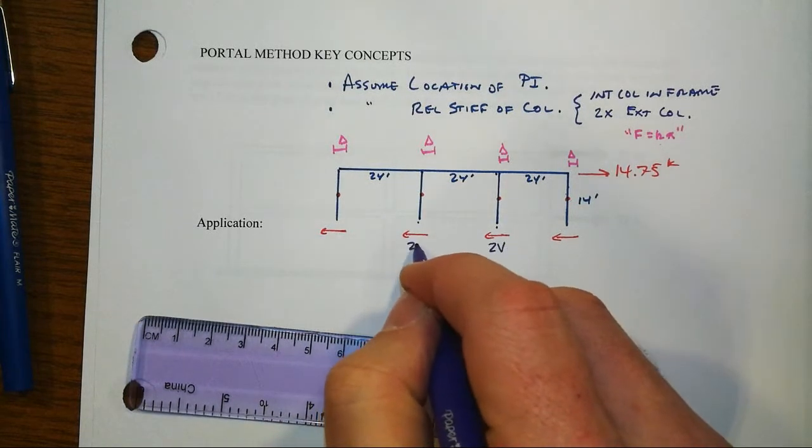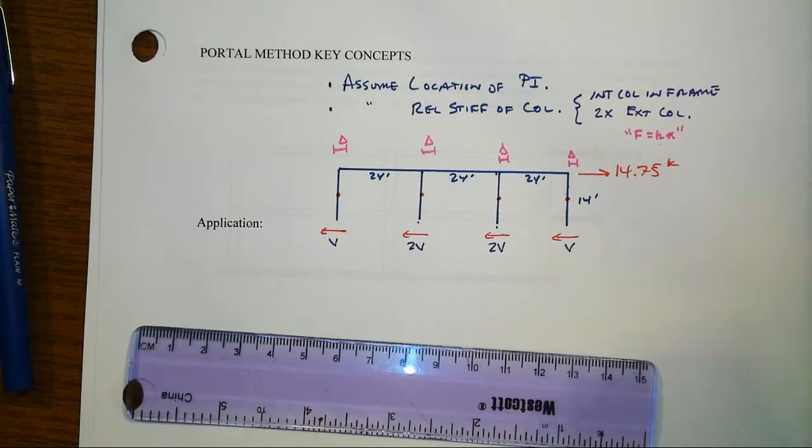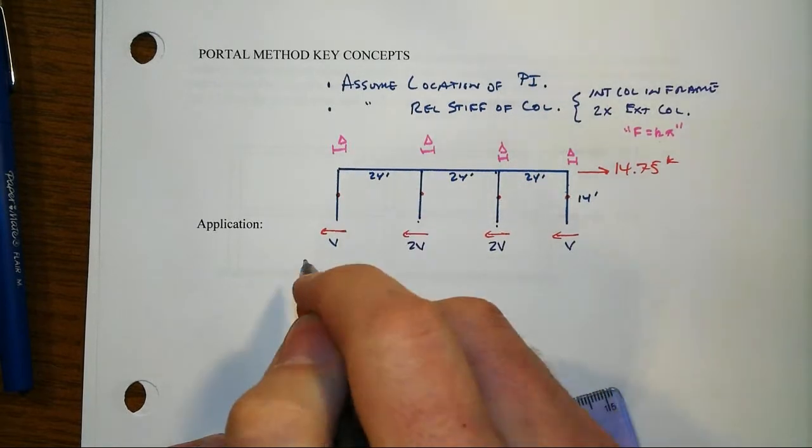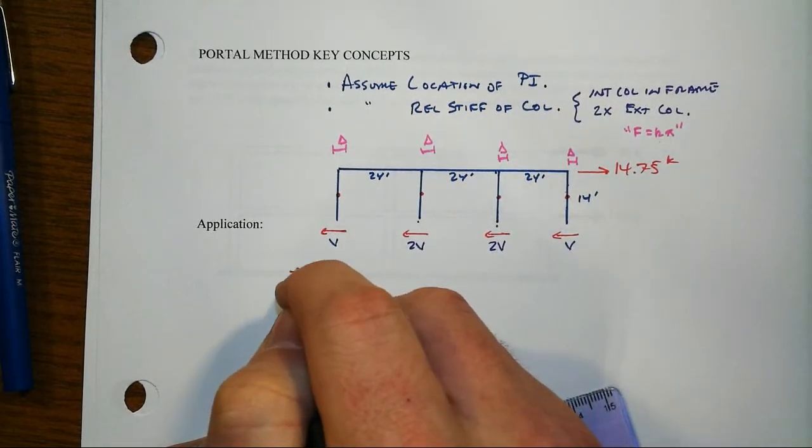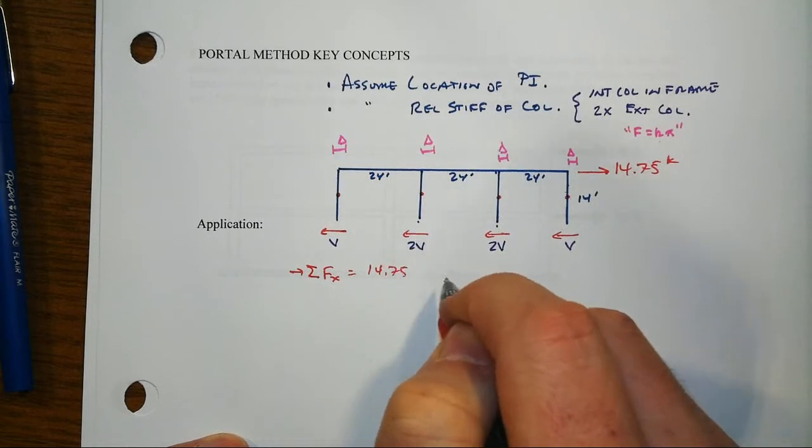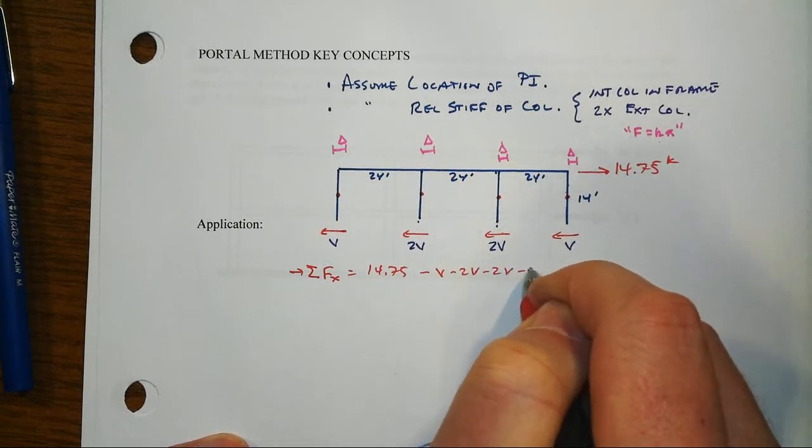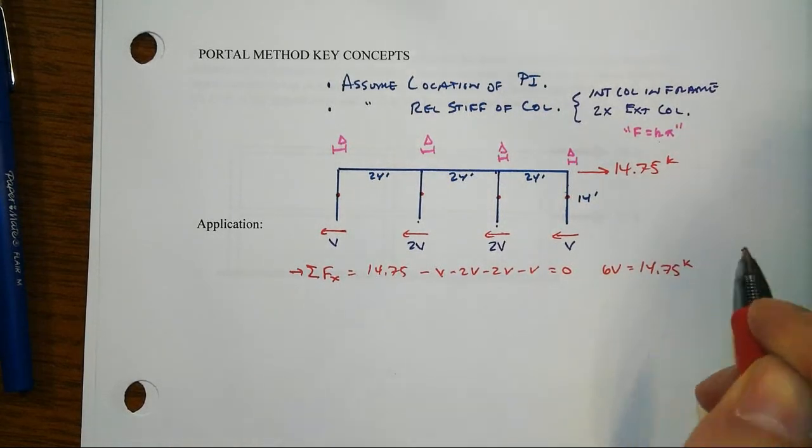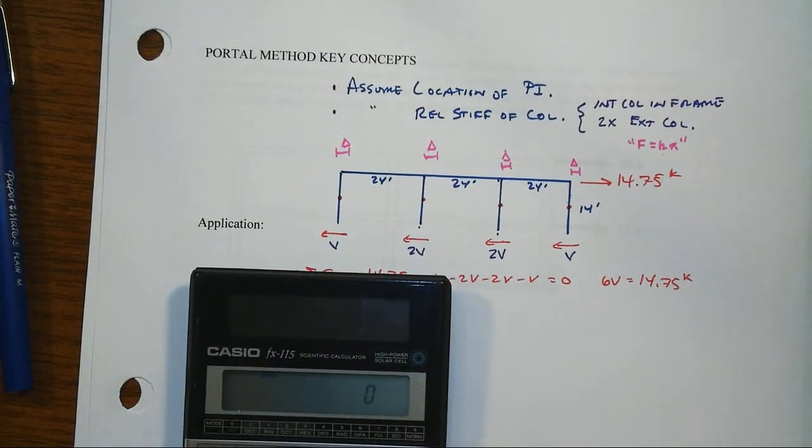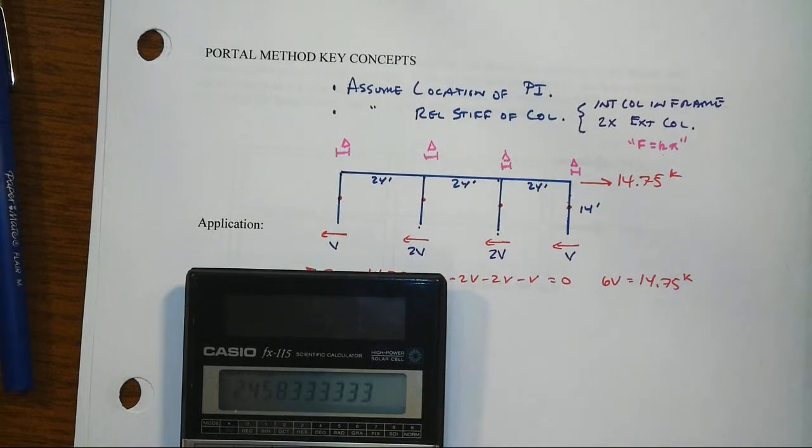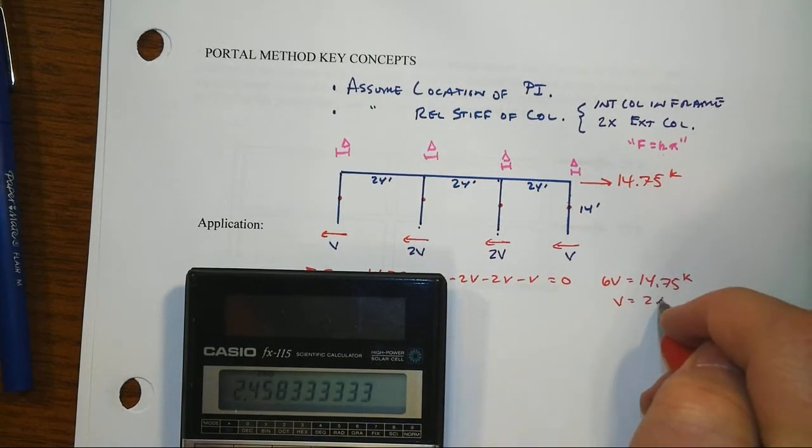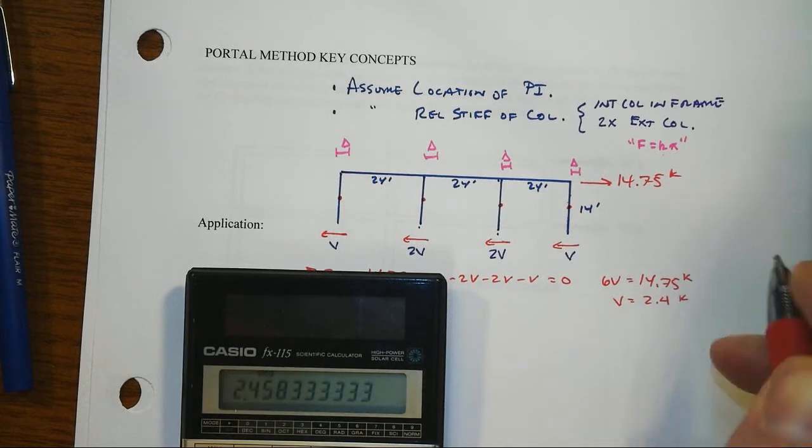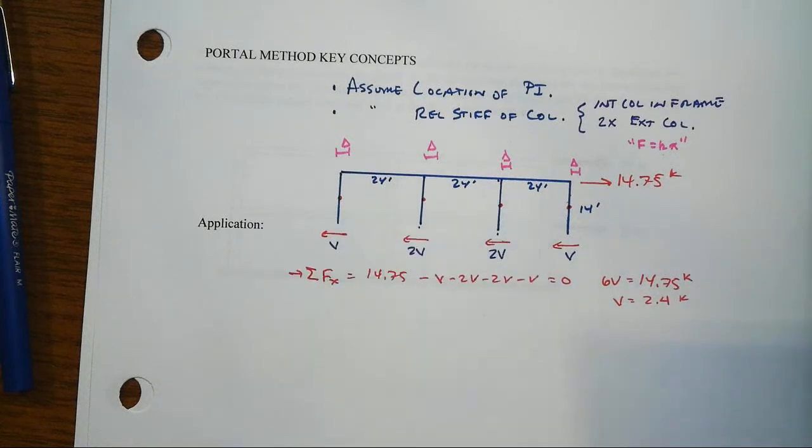So that will be 2V on the inside, V on the outside. Now when we do the simple equilibrium equation, we'll get 14.75 minus V minus 2V minus 2V minus V equals 0. In other words, 6V equals 14.75 kips. When we assumed equal stiffness, we had that as 4V equal to 14.75. And so now the shear force has gone down to about 2.46, 2.4-ish kips. I'll just keep the digits in my calculator for now.